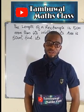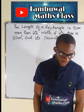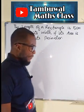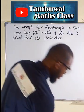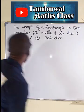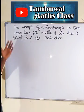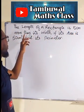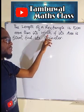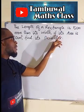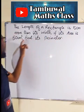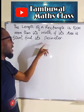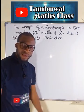Hello, good day viewers. If you are ready, let us solve these two problems. The first one is already on the board. It reads: the length of a rectangle is 5 cm more than its width. If its area is 50 cm squared, find its perimeter.